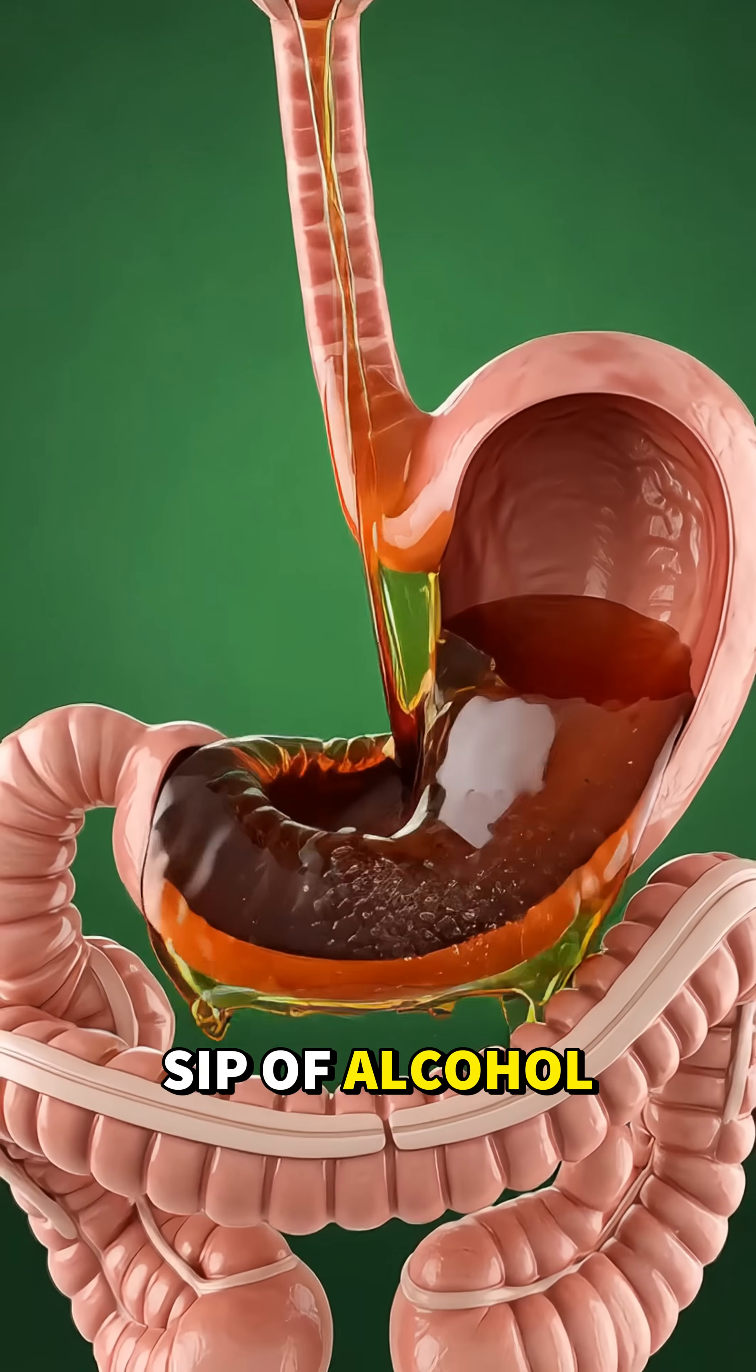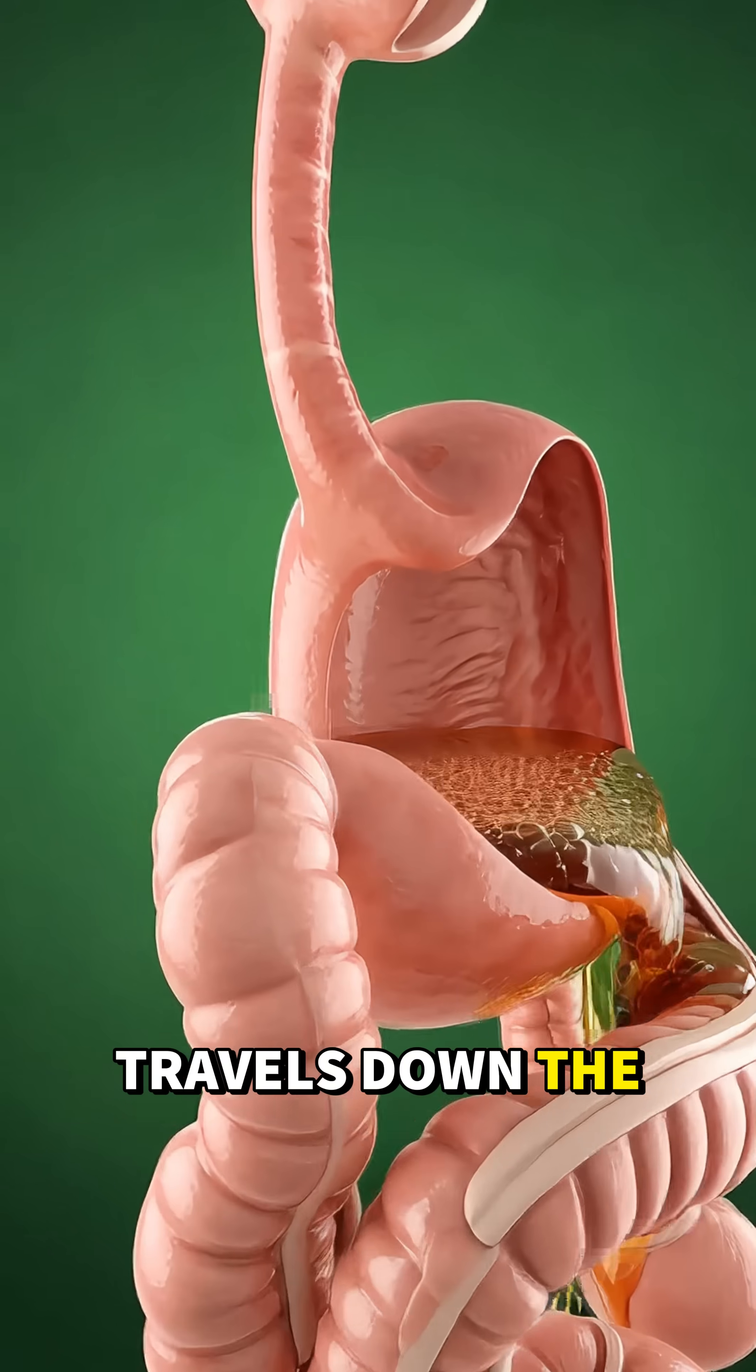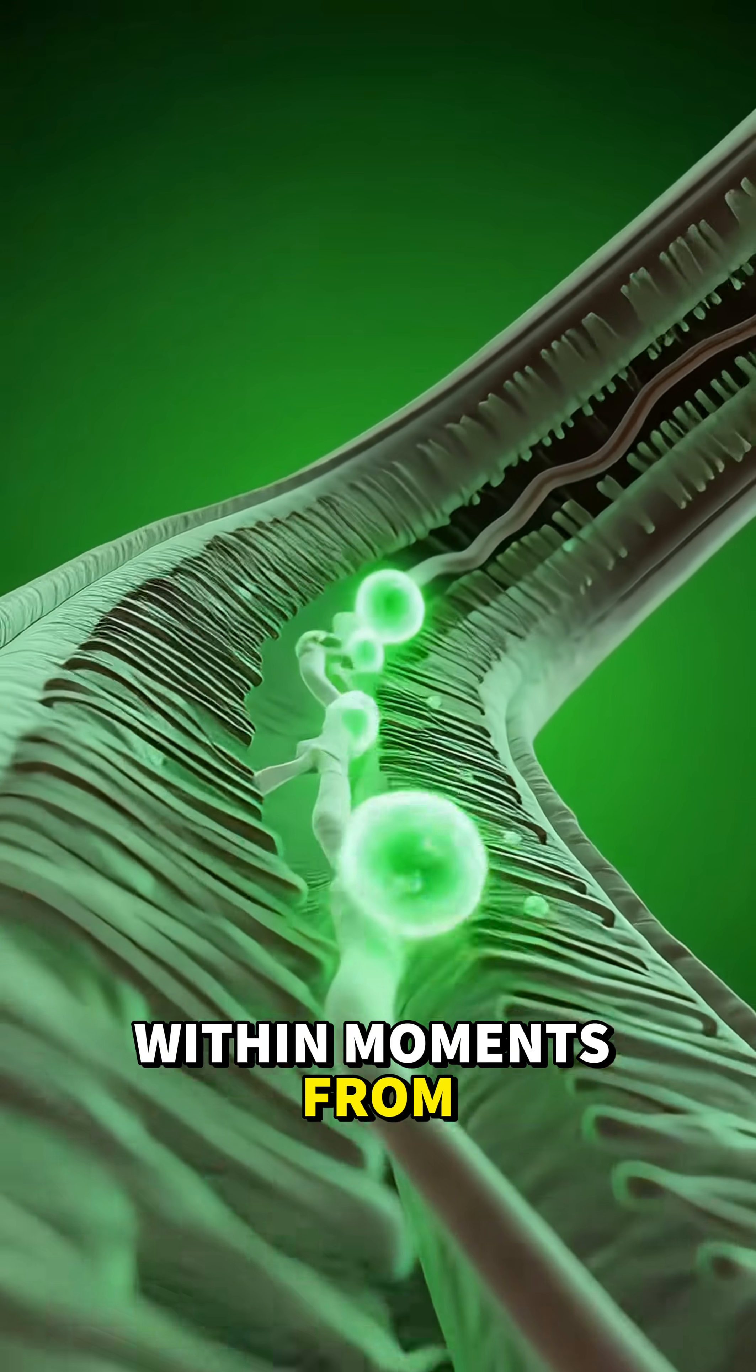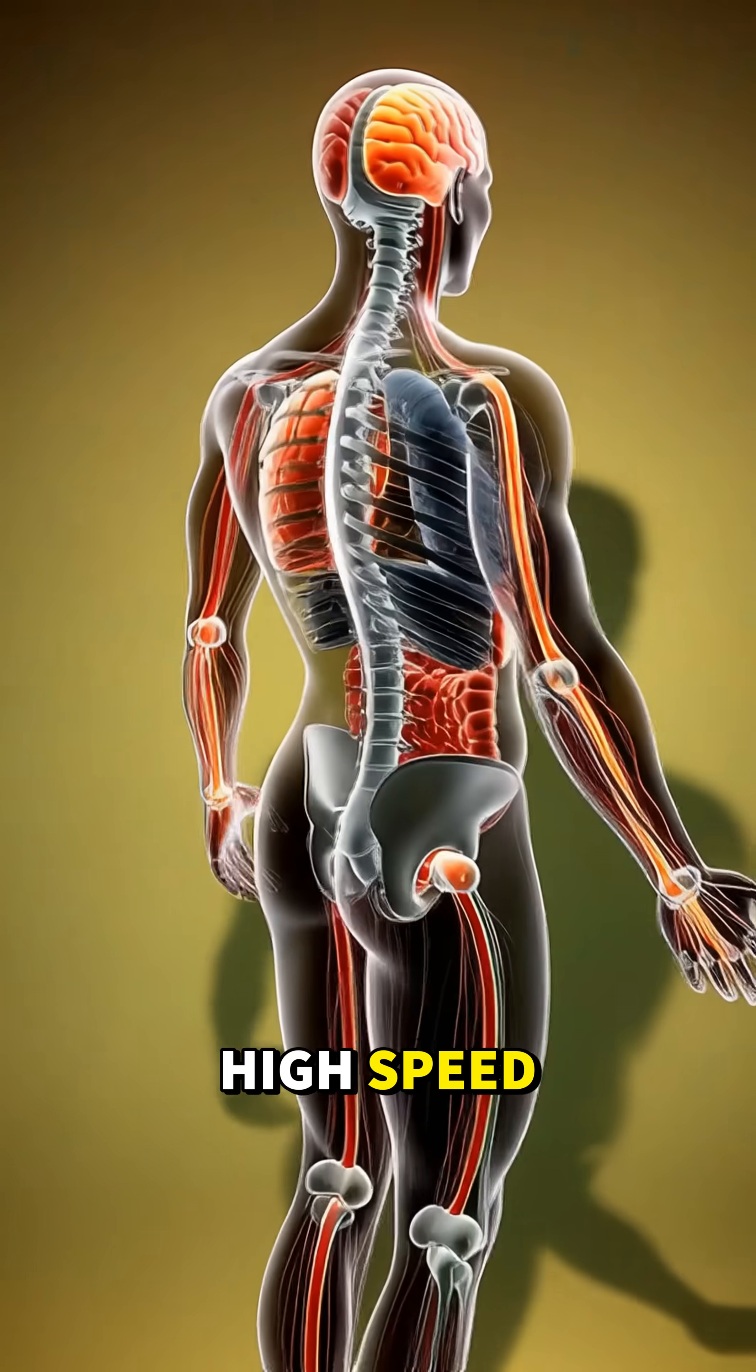When a person takes the first sip of alcohol, the body reacts immediately. As the liquid travels down the throat, the stomach begins absorbing ethanol within moments. From there, the small intestine takes over, pulling alcohol into the bloodstream at high speed.